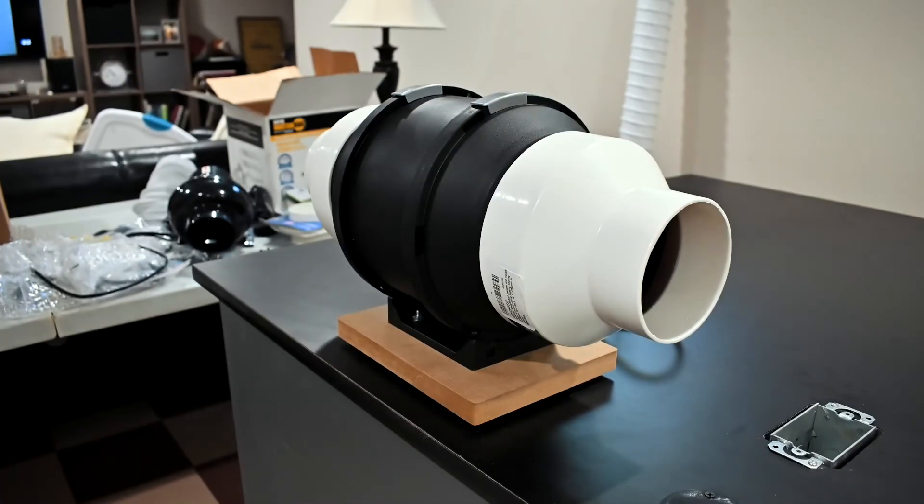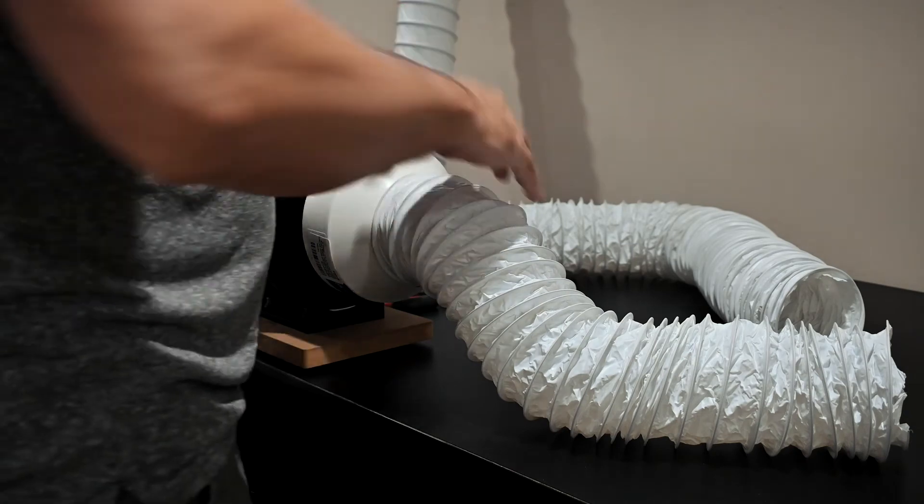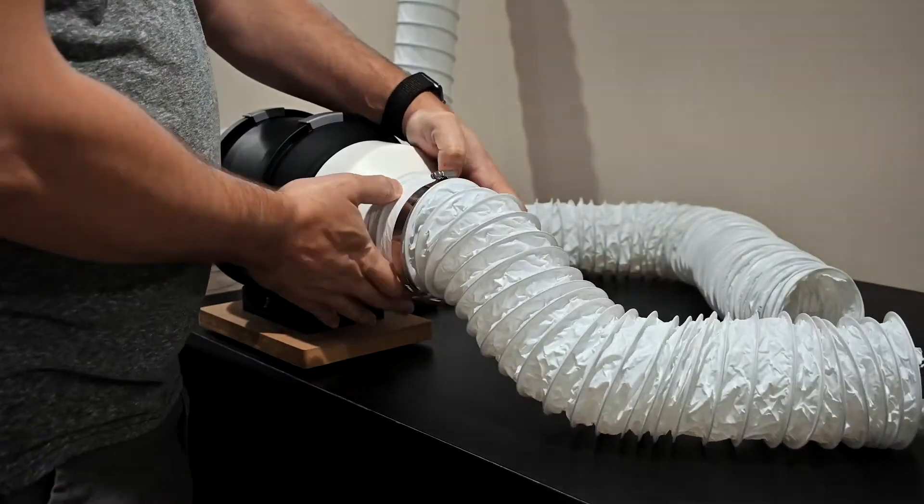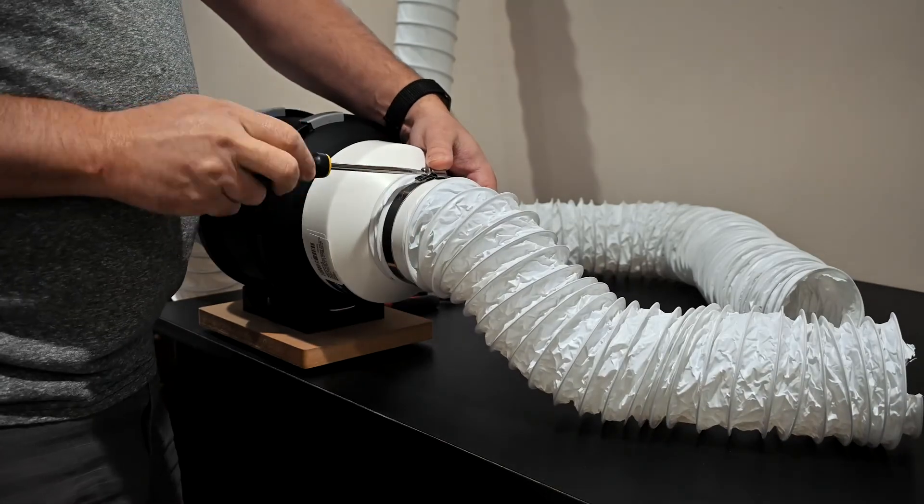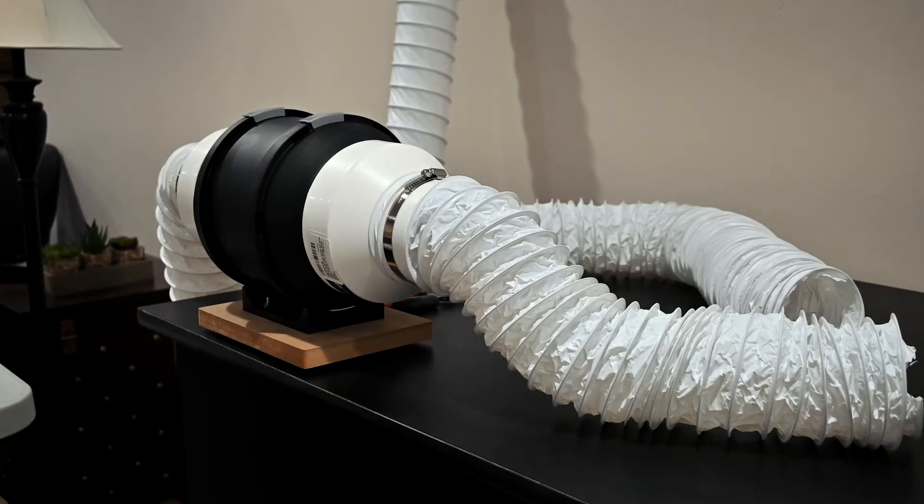Finally I cut the vent hose to size and attached it to the fan with hose clamps. In the next part of the build series I will build the XY axis for the laser. Thanks for watching.